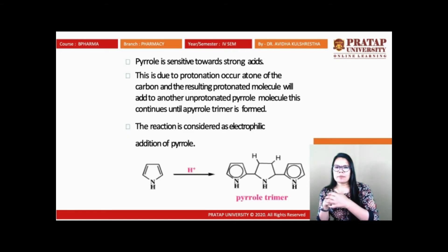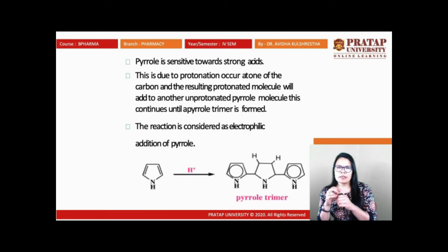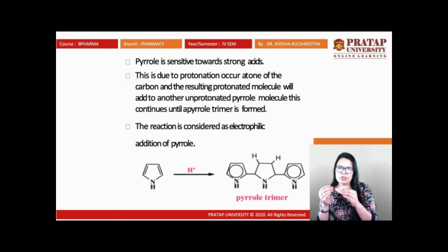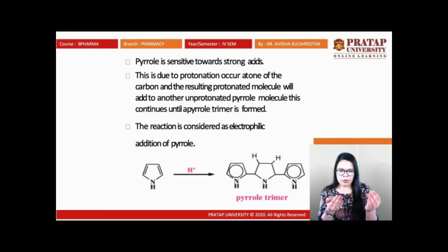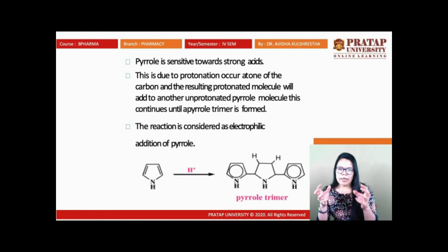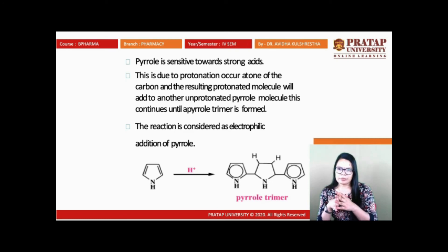Pyrrole is also sensitive to strong acid. Protonation occurs at carbon, and the resulting protonated molecule adds to another unprotonated pyrrole molecule; this continues until a pyrrole trimer is formed. This conjugated reaction occurs when pyrrole accepts a proton and is converted into a dimer or trimer. This reaction is considered an electrophilic addition of pyrrole — a specific reaction not found in other aromatic systems.